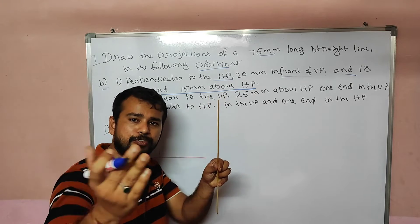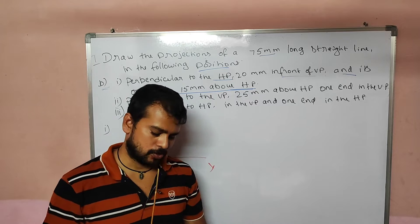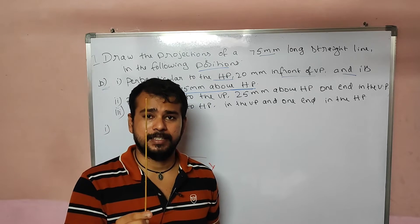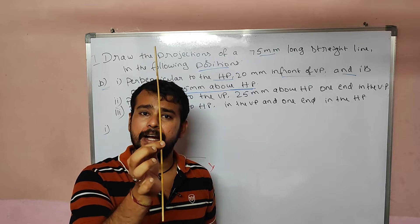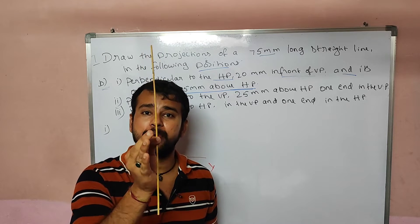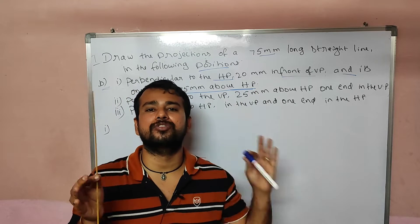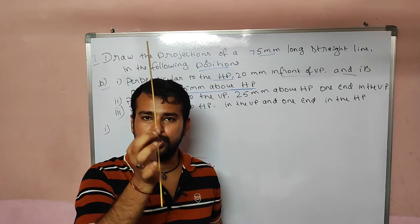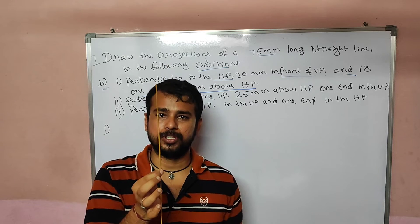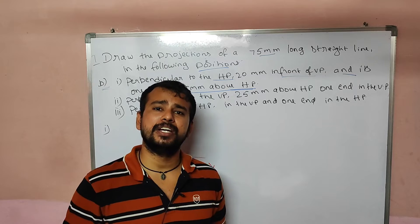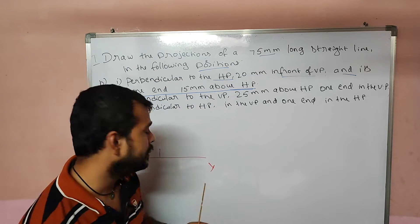We can see the point in front view. The line is the actual length. We can see the problem. We can see the actual length — it's not true length, it's not true length, it's not true length. It's not true shape.